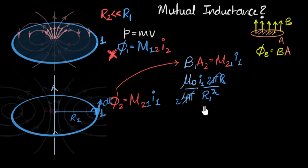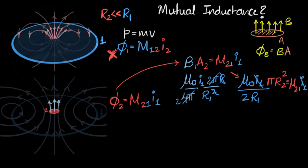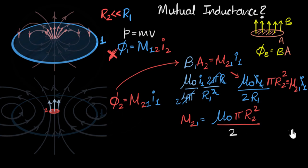So the magnetic field is mu-naught I1 over two R1, and the area of the tiny coil is A2 equals pi R2 squared. Substituting: mu-naught I1 over two R1 times pi R2 squared equals M21 times I1. The I1 cancels on both sides, giving us M21 equals mu-naught pi R2 squared divided by two R1.